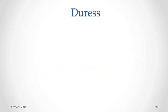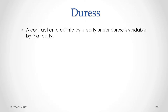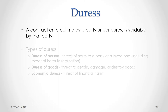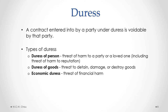Another type of contractual defect is duress. A contract entered into by a party that is under duress is voidable by that party. There are a few kinds of duress: duress of person, which is a threat of harm to the party or a loved one, including a threat of harm to reputation; duress of goods, which is the threat to detain, damage or destroy goods; and also economic duress, which is the threat of financial harm.